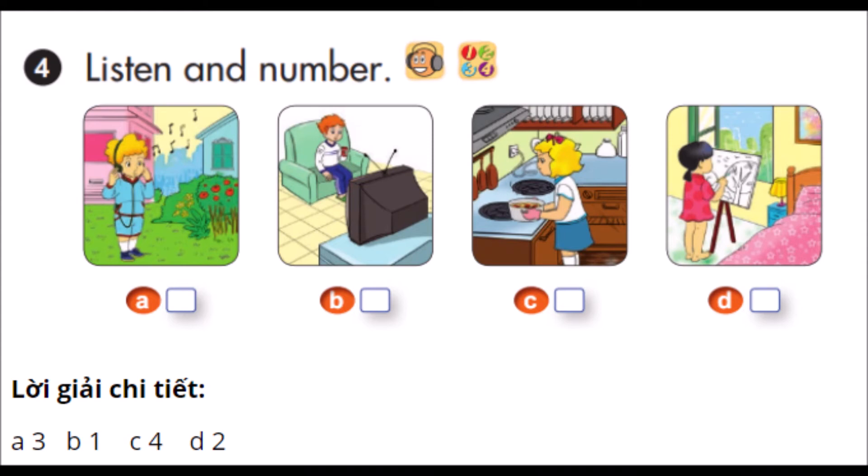3. Where's Peter? He's in the garden. What's he doing? He's listening to music.